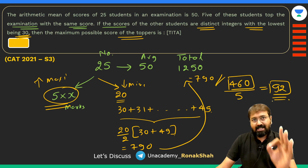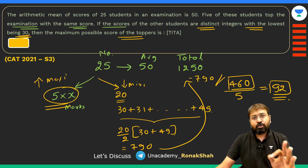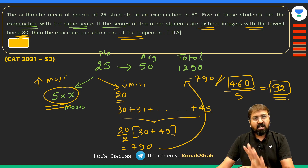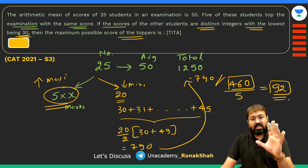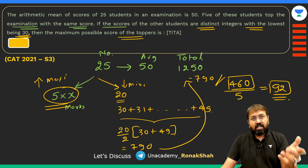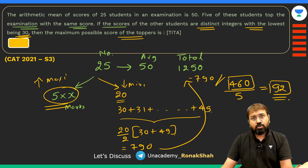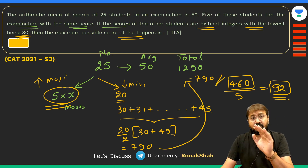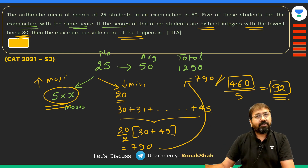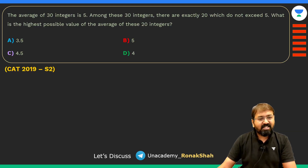Notice this question should be solvable in under 60 seconds. The key insight is: to maximize the toppers' average score, you must minimize the scores of the other students. Let's take one more similar question.